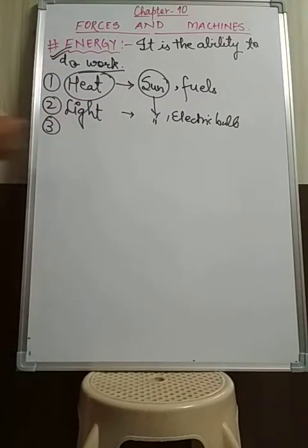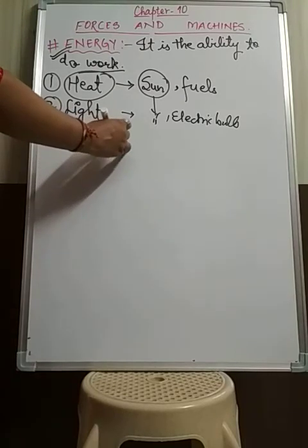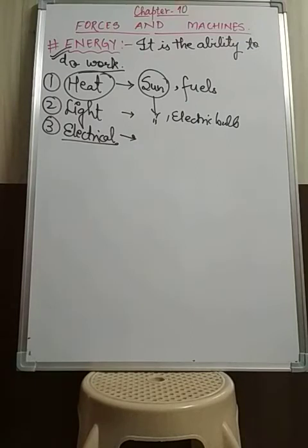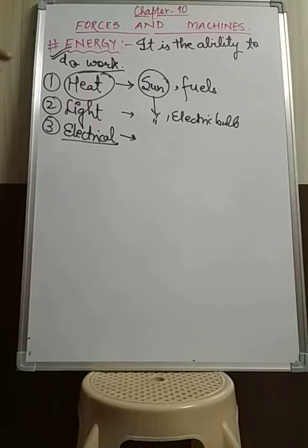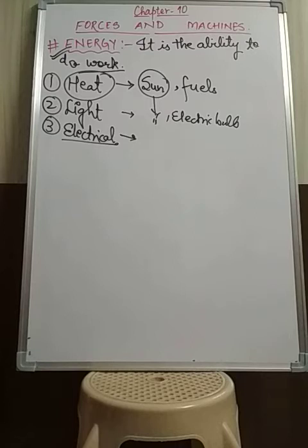The third form of energy is electrical energy. Electrical bulbs, tube lights, televisions, computers, and other electrical appliances run on electrical energy. This electrical energy is present in electricity, which is generated at power stations and supplied to our homes through wires. In our homes, there is one main wire from which different lines branch out through the whole house.